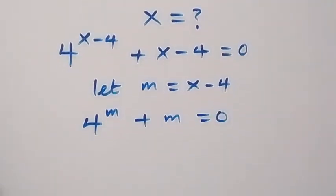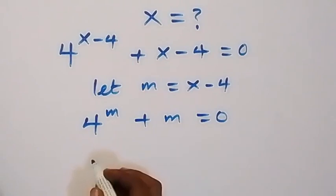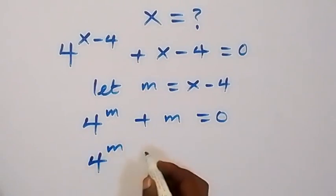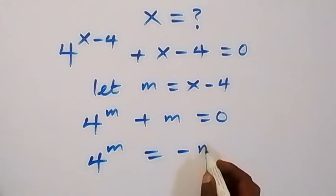Then next step, let's take m to this side and we have 4 raised to power m, now equals to minus m from here.